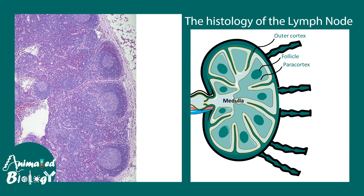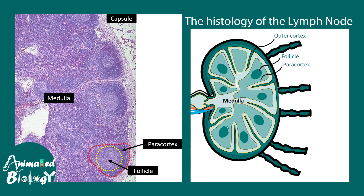Let us try to understand the histology of the lymph node. Looking at the histology slide, this is the capsule and this is the medulla to orient you. The most important structures that should catch your eye are the follicular region and the paracortical regions. Train your eye to identify the follicles and paracortex regions.